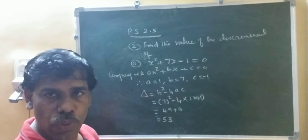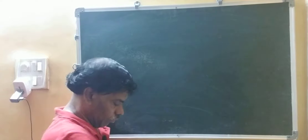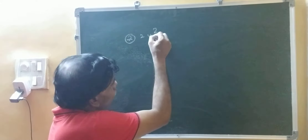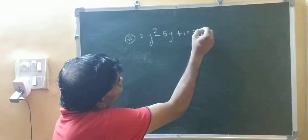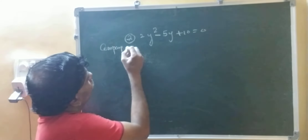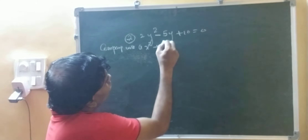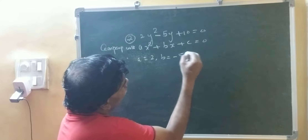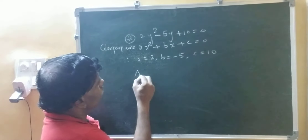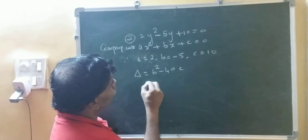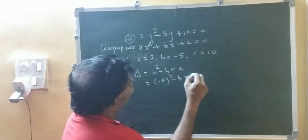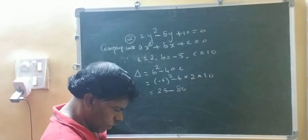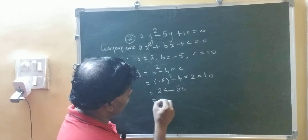Next one — second sum: 2y squared minus 5y plus 10 equals 0. Comparing with ax squared plus bx plus c equals 0, therefore a equals 2, b equals minus 5, c equals 10. Therefore discriminant equals b squared minus 4ac equals minus 5 squared minus 4 into 2 into 10 equals 25 minus 80, which is minus 55.